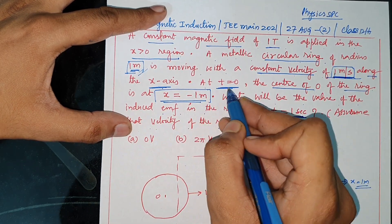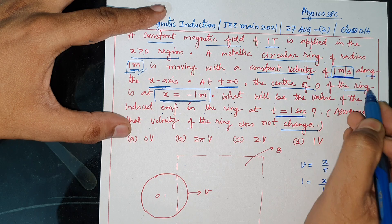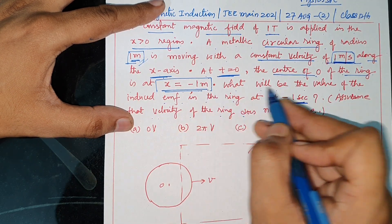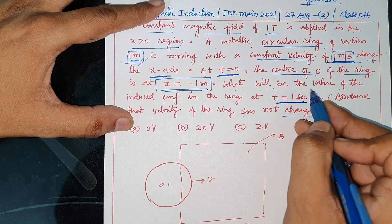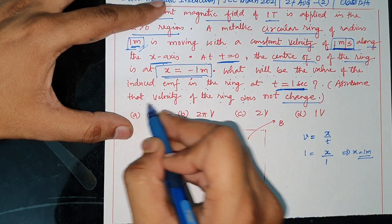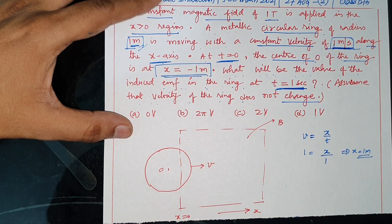At t = 0, the center O of the ring is at x = -1 meter. What will be the value of induced EMF in the ring at t = 1 second? Assume that the velocity of the ring does not change.